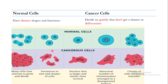Normal cells usually have a very small nucleus. The ratio of nucleus to cytoplasm in normal cells is about 1:6 or 1:4. Cancer cells have a very large nucleus, and the nucleus-to-cytoplasm ratio in most cases is 1:1. Because cancer cells have a much larger nucleus, their shape is very different from their normal counterparts.